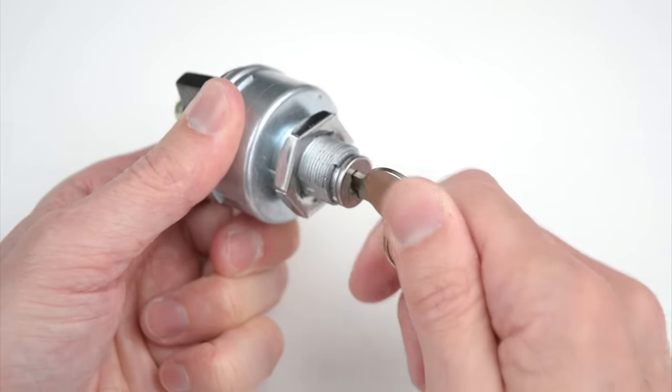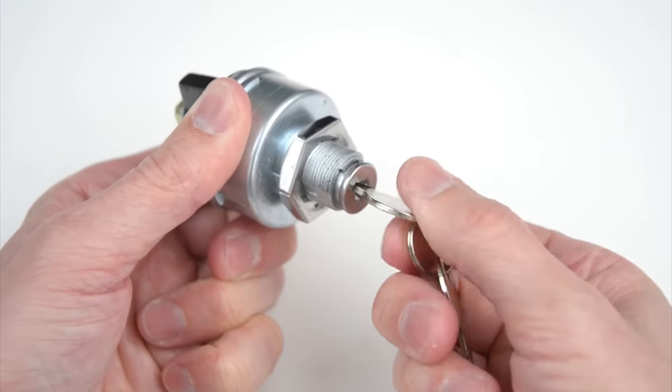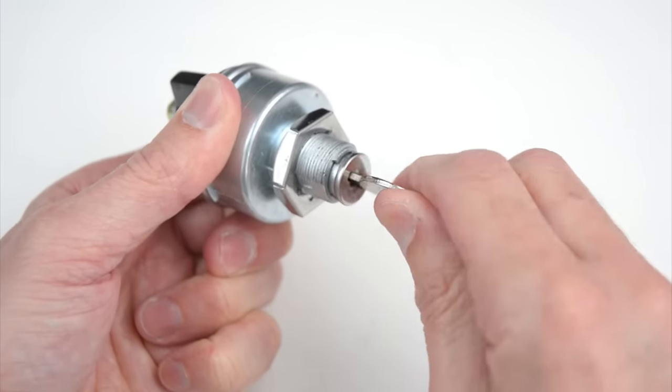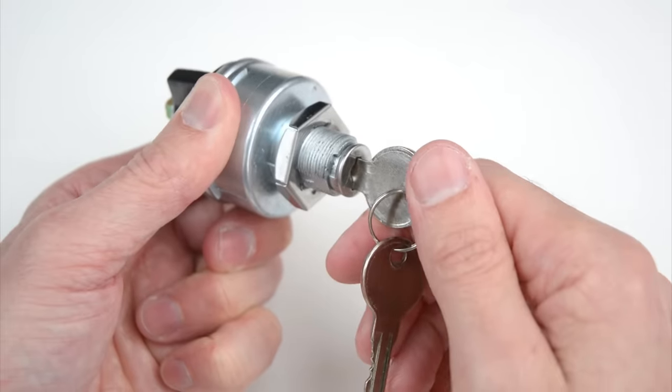To add a key starter switch to a button box or a simulator, we can use a universal ignition starter switch. It has accessories, ignition, and momentary start positions.